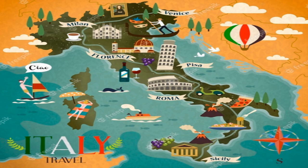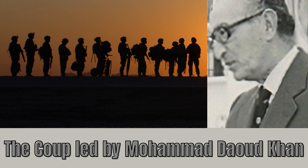In 1973, while Zahir Shah was in Italy on vacation, his government was overthrown in a coup — a nonviolent revolution led by Muhammad Dawood Khan, who was the cousin of Muhammad Zahir Shah.